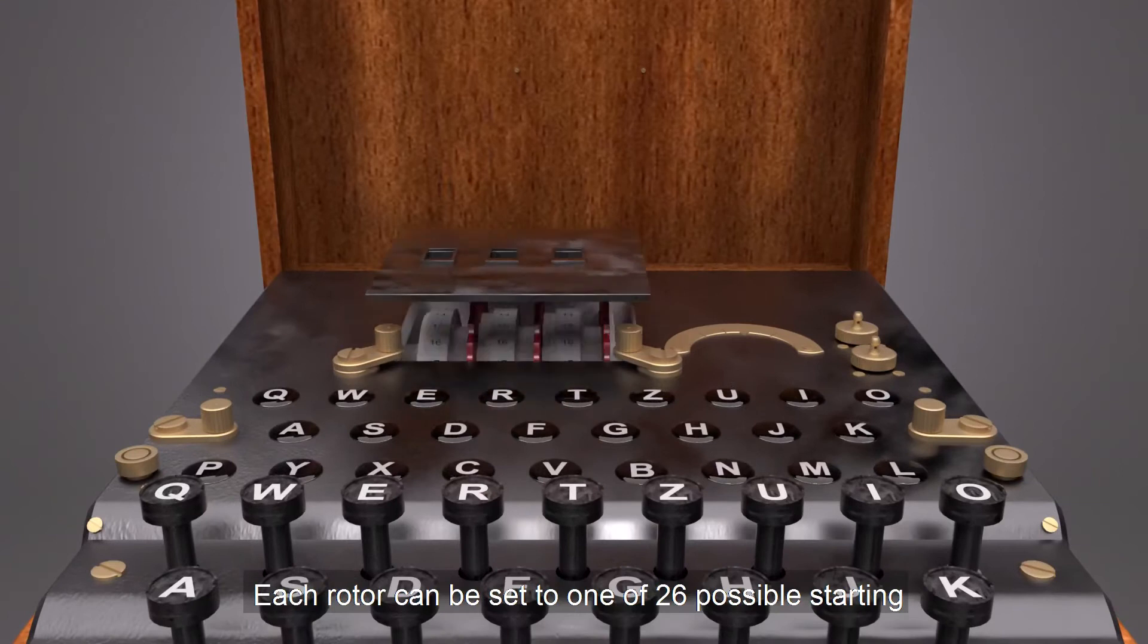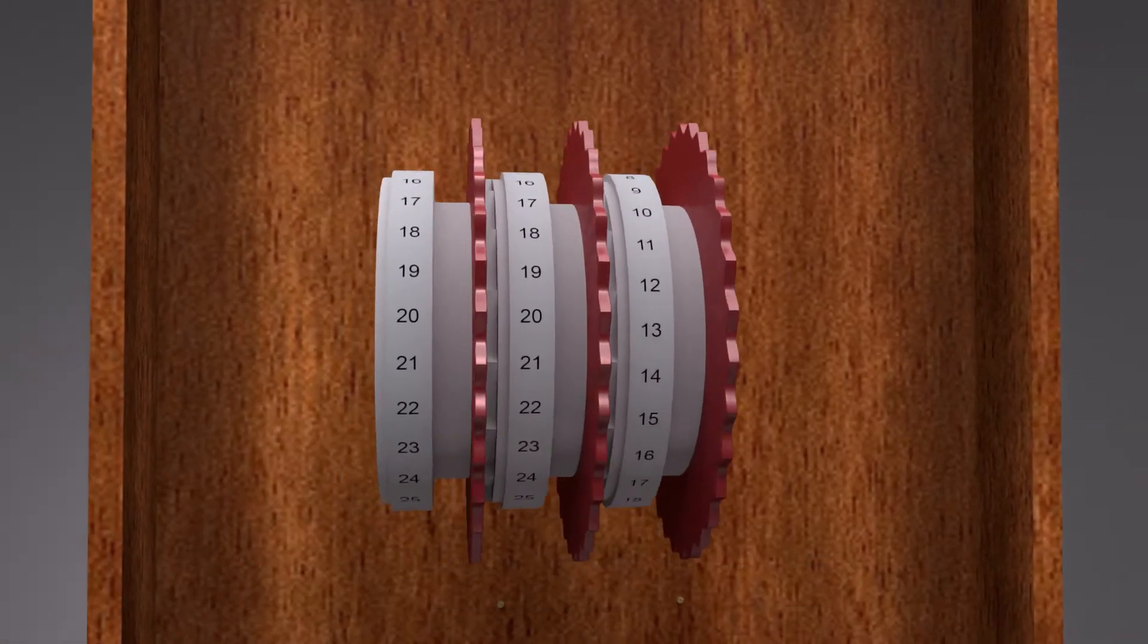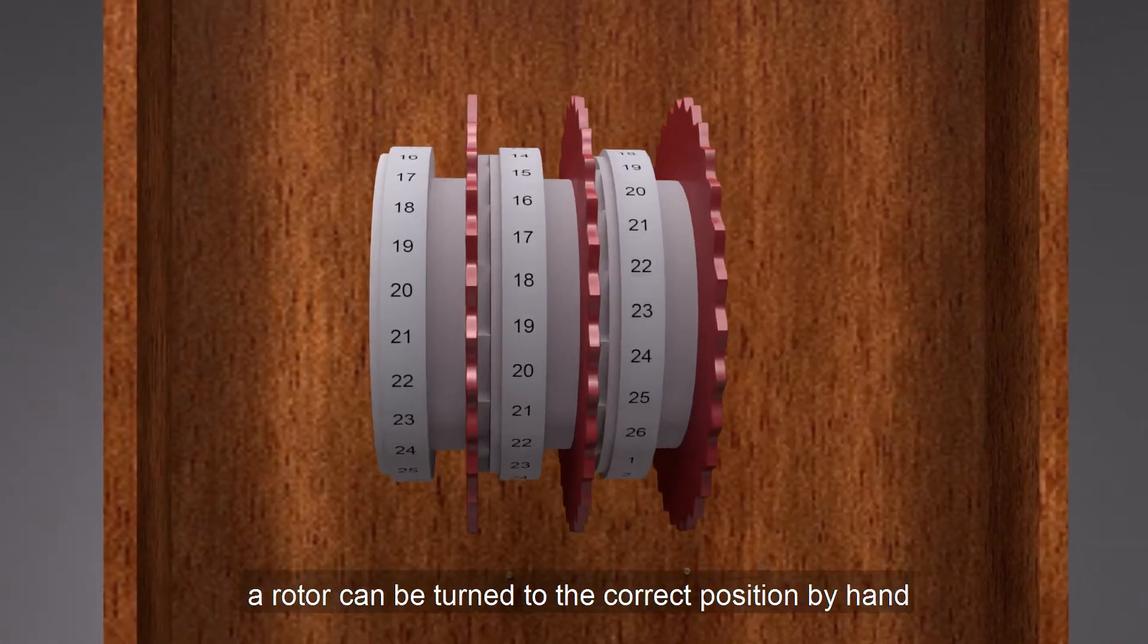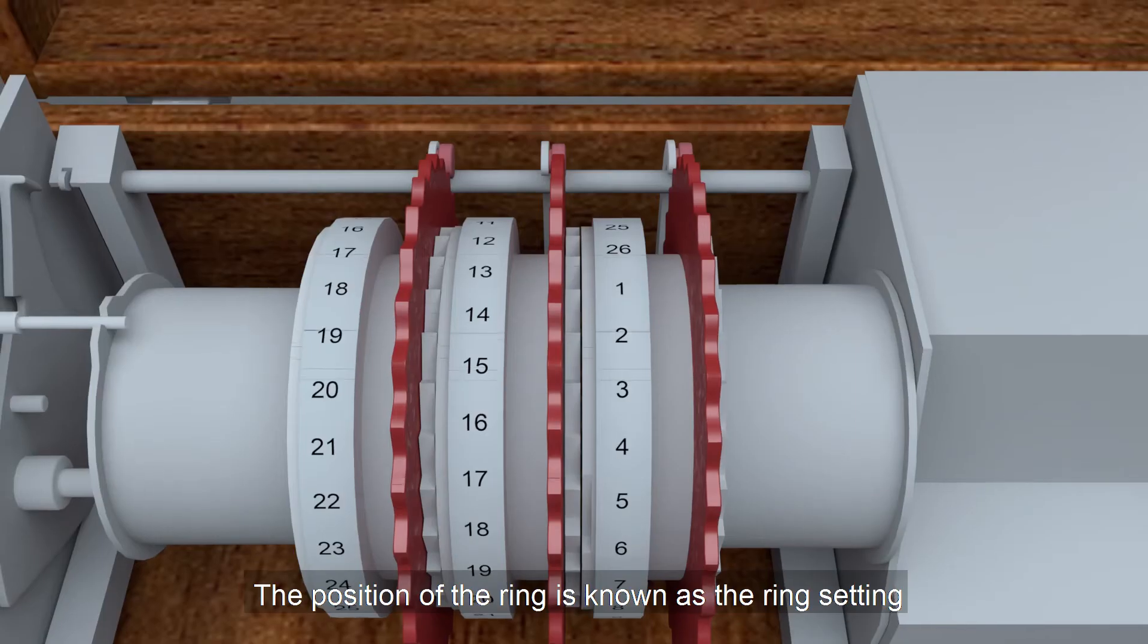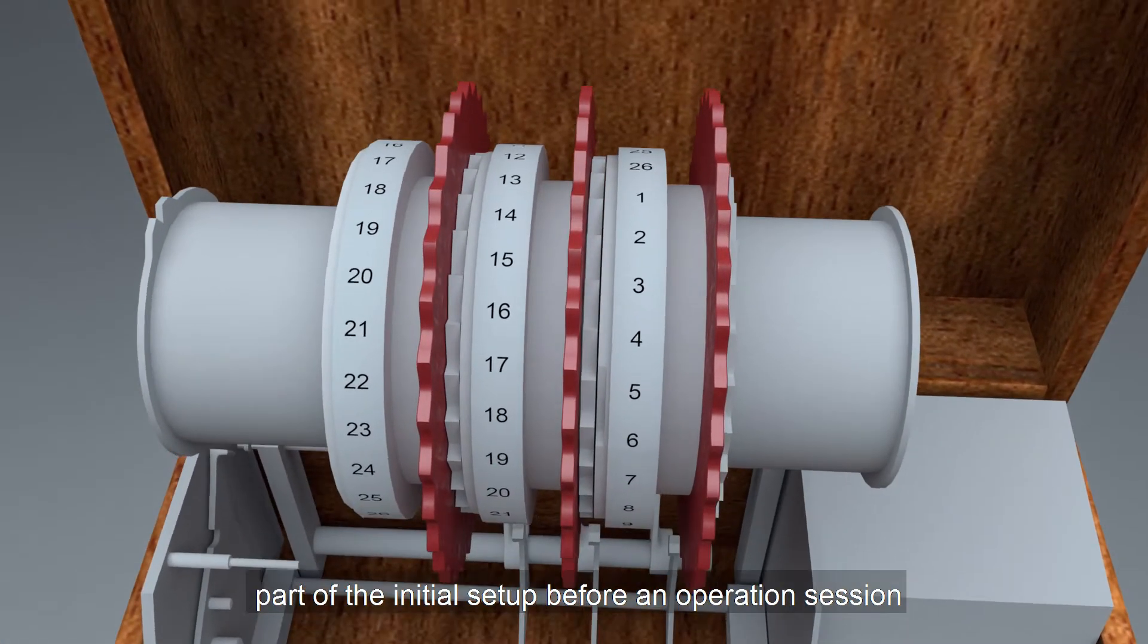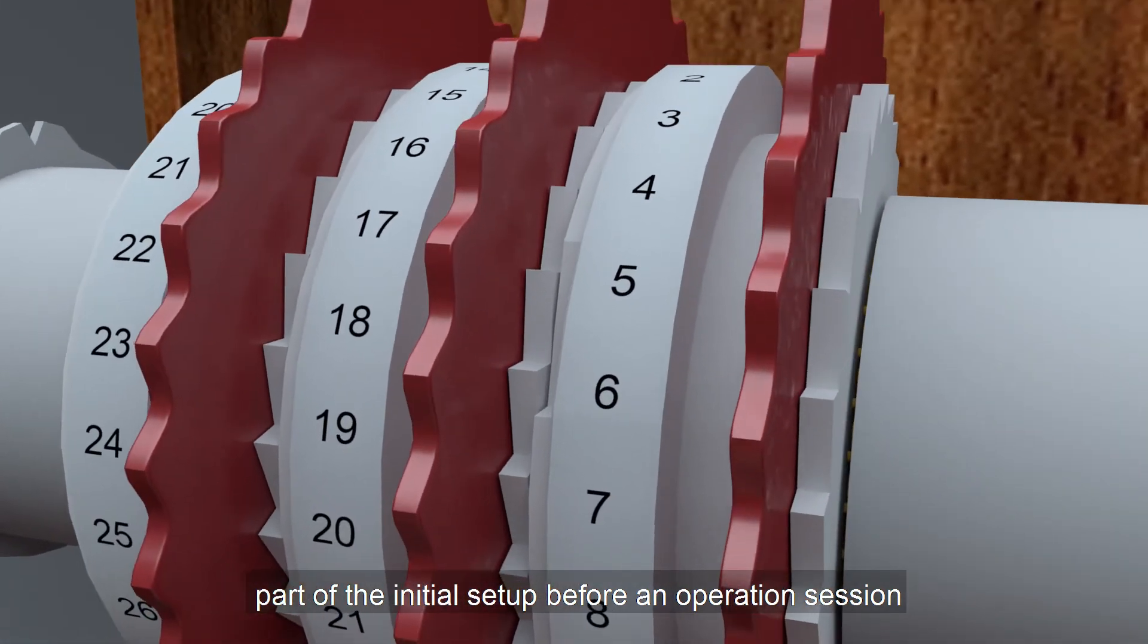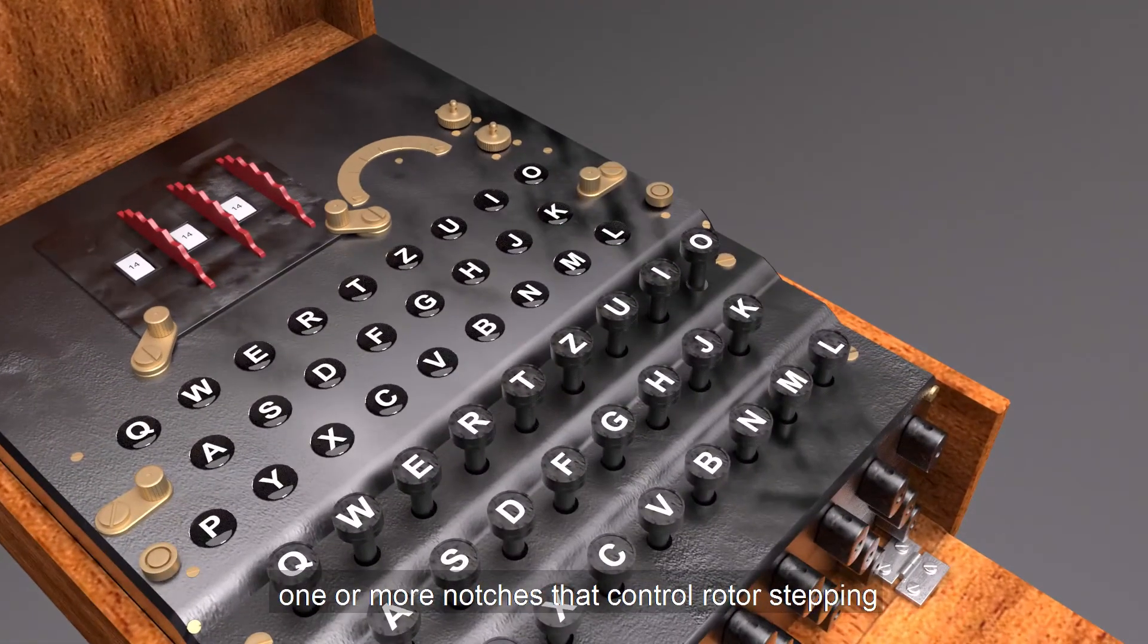Each rotor can be set to one of 26 possible starting positions when placed in an Enigma machine. After insertion, a rotor can be turned to the correct position by hand. The position of the ring is known as the ring setting, and that setting is a part of the initial setup before an operation session. Each rotor contains one or more notches that control rotor stepping.